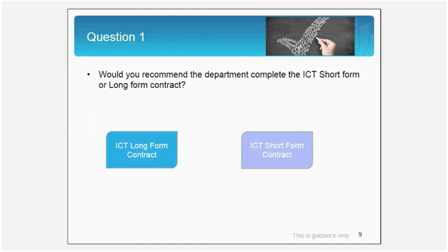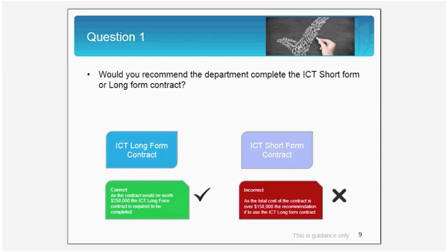At the onset, the first basic question which needs to be addressed is: which form would you recommend the department to use, the ICT long-form contract or the short-form contract? The correct answer is the ICT long-form contract, as the work being engaged in is worth $250,000, which is over the $150,000 mark. The short-form contract is used for contracts which are under $150,000.